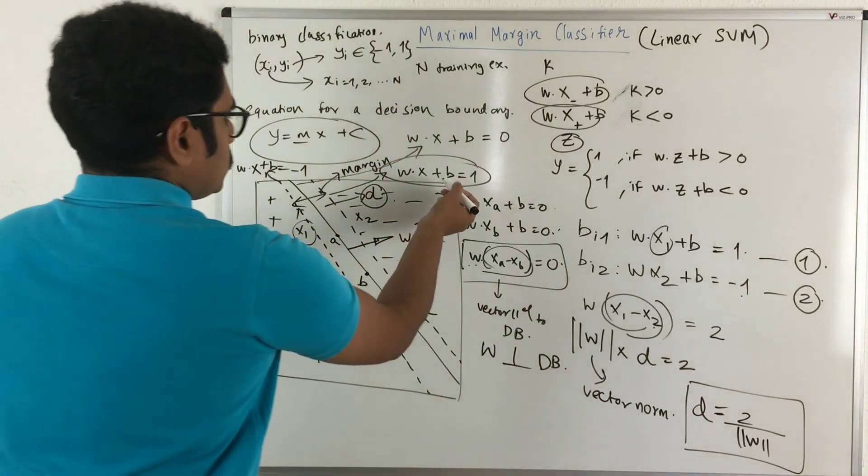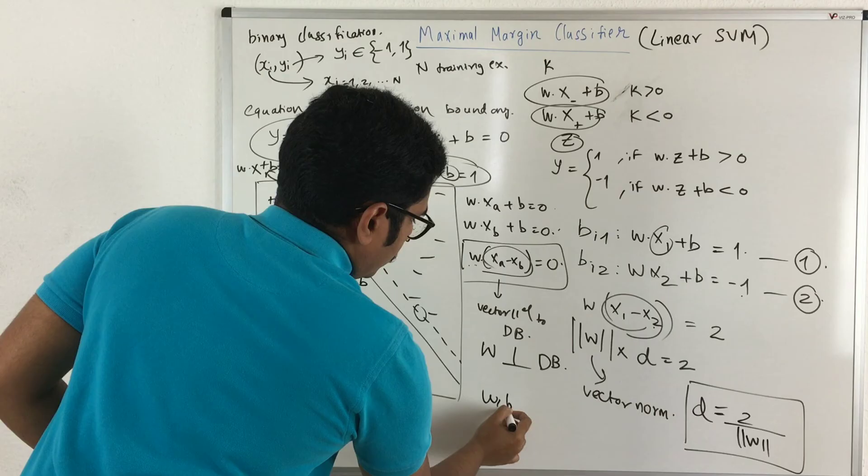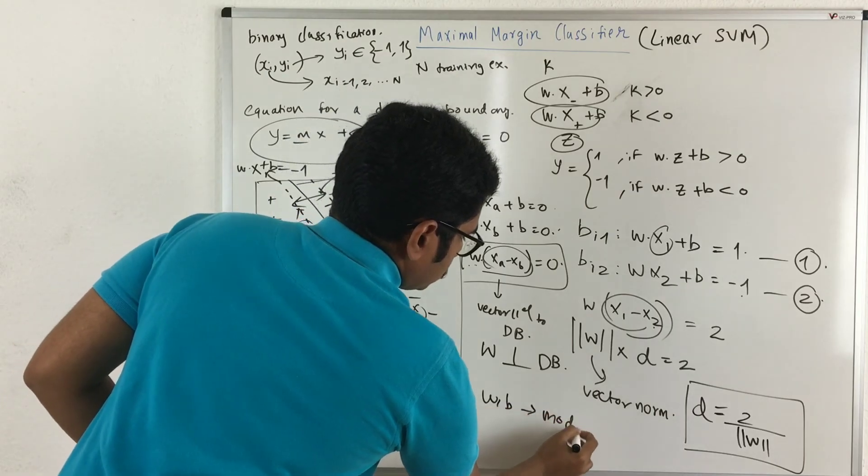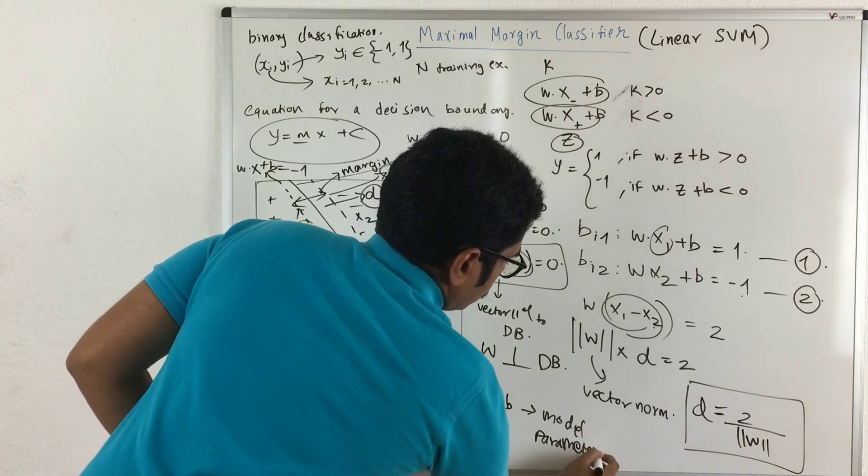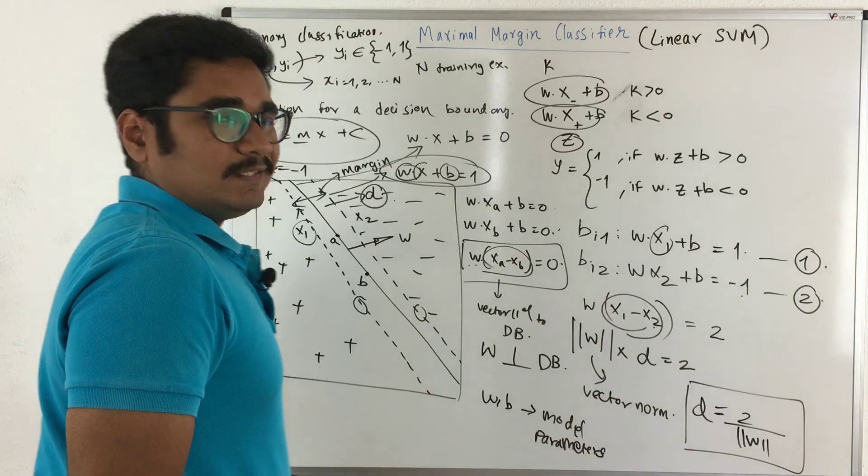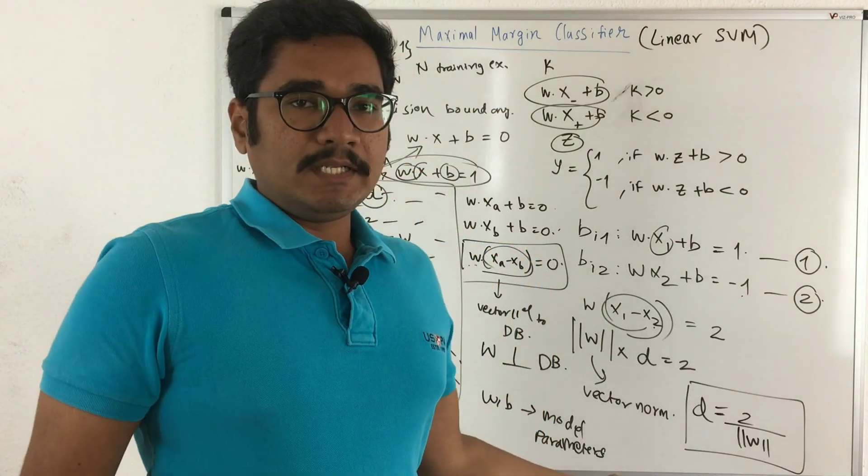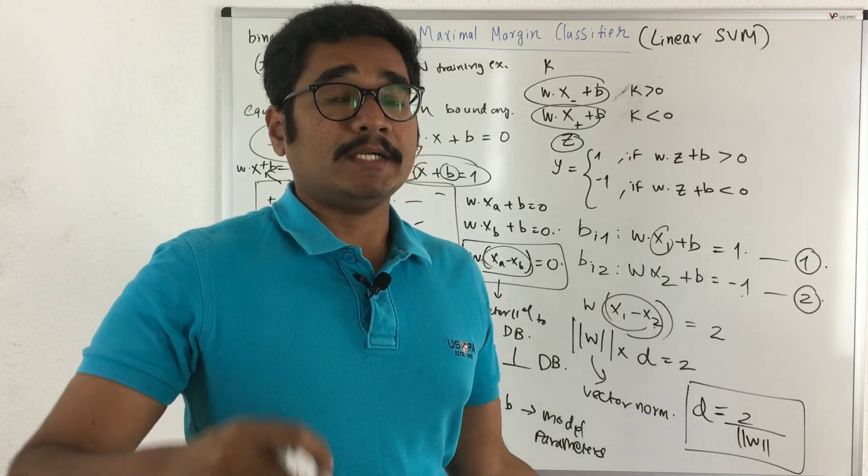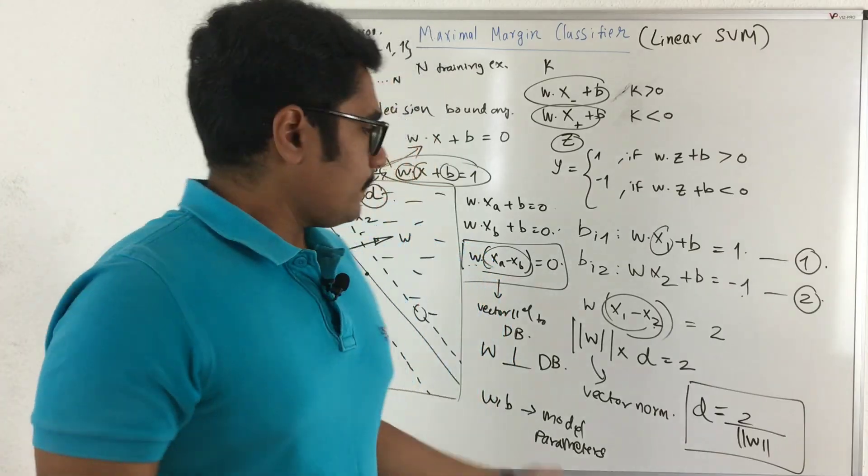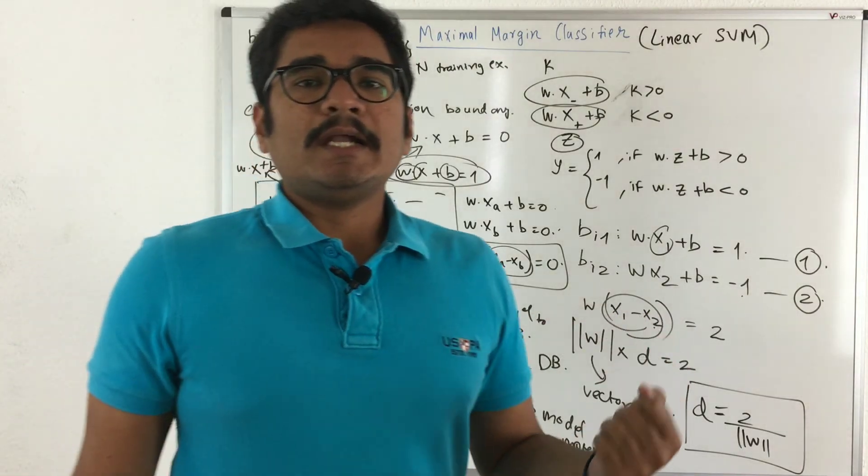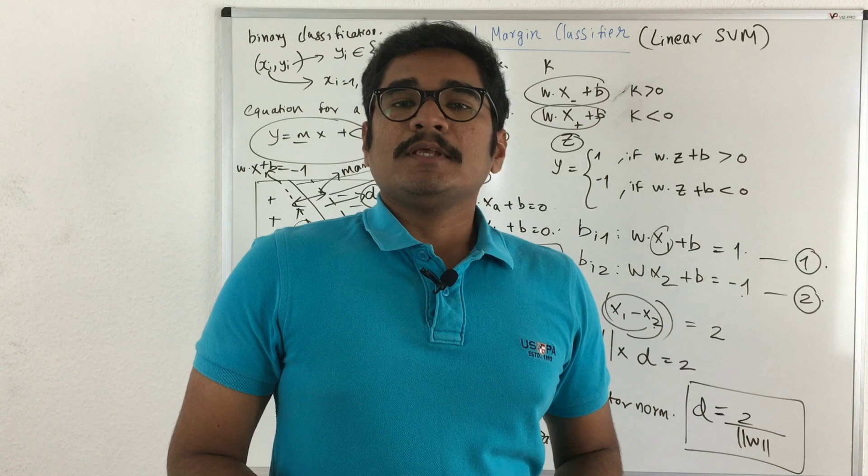Now here in this, you will be asking from where these parameters W and B came. So W and B are basically model parameters. We have already discussed these things in hyperparameters. These are basically intrinsic to your classifier and it's not being externally configured to the system or the model. So well, that was all regarding the linear SVM or the maximal margin classifier in machine learning.